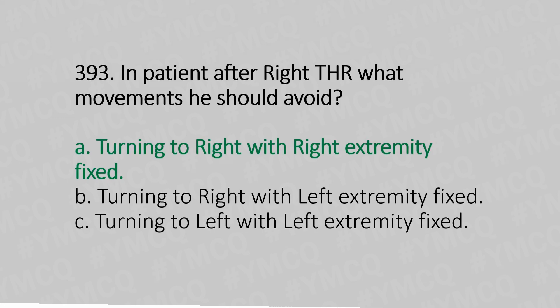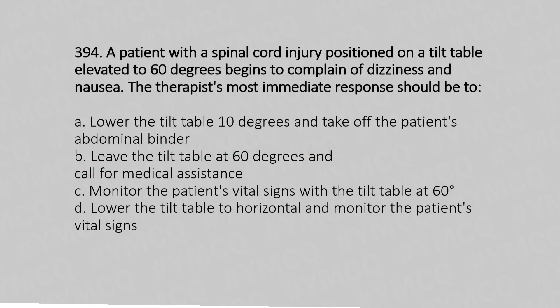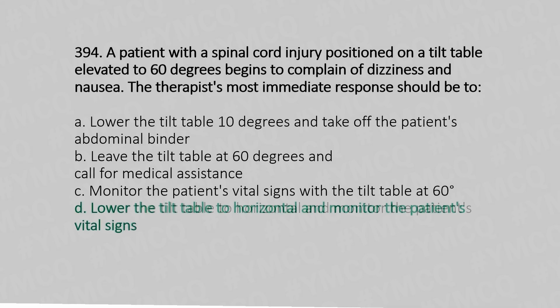Question 394: A patient with a spinal cord injury positioned on a tilt table elevated to 60 degrees begins to complain of dizziness and nausea. The therapist's most immediate response should be: Option A: lower the tilt table 10 degrees and remove the abdominal binder. Option B: leave the table at 60 degrees and call for medical assistance. Option C: monitor vital signs at 60 degrees. Option D: lower the tilt table to horizontal and monitor the patient's vital signs. The answer is Option D.